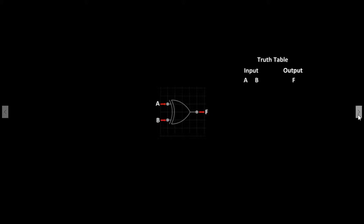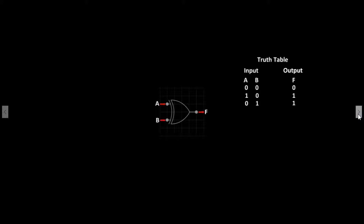The truth table for a two-input XOR gate is as follows. The XOR gate will only produce a high signal when either A or B are set to 1. The Boolean expression for this is F equals A XOR B.